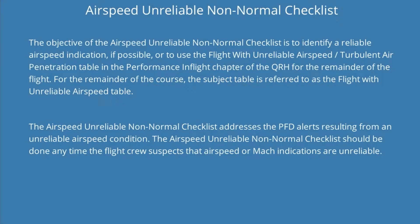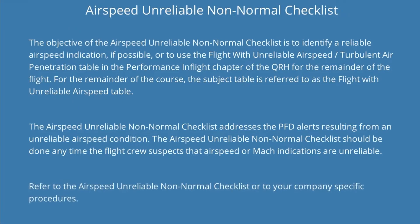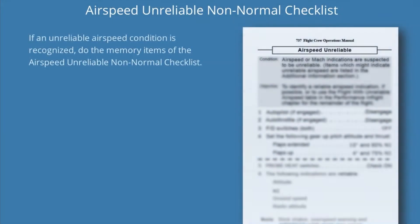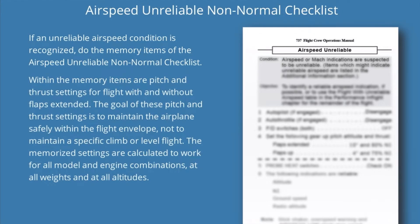The airspeed unreliable non-normal checklist addresses the PFD alerts resulting from an unreliable airspeed condition. The checklist should be done anytime the flight crew suspects that airspeed or Mach indications are unreliable. Refer to the airspeed unreliable non-normal checklist or your company's specific procedures if an unreliable airspeed condition is recognized.